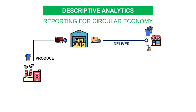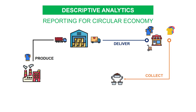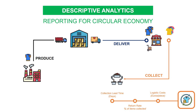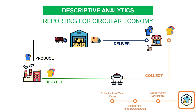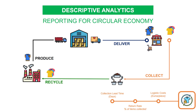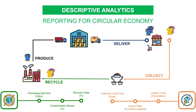In our example, this requires a logistics process to collect and sort used garments in your stores, monitored with KPIs like logistics cost per unit, return rate, and collection lead time. The recycling process manages sorted items with performance indicators like processing lead time, contamination stream, and recovery rate.